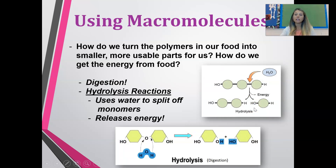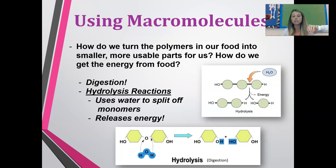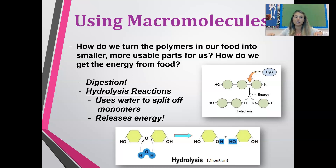The opposite process is hydrolysis, which is what happens when you digest food — turning large food molecules into smaller, more usable parts. In hydrolysis, you add a water molecule: an H bonds to one monomer and an OH bonds to the other, breaking them apart back into individual monomers. Adding water is why it's called hydrolysis. This process releases energy — breaking those bonds apart and creating smaller subunits releases the energy stored in those bonds.